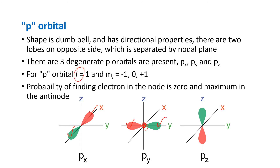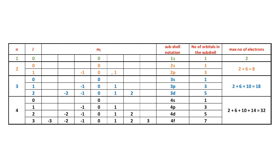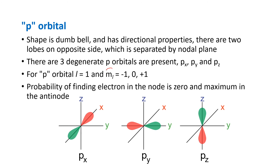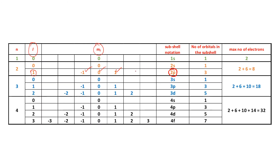Looking at the chart, for the p orbital the angular momentum quantum number l is always equal to 1, and the magnetic quantum number ml has three values: minus one, zero, and plus one. You can see this confirmed in the chart on this slide.